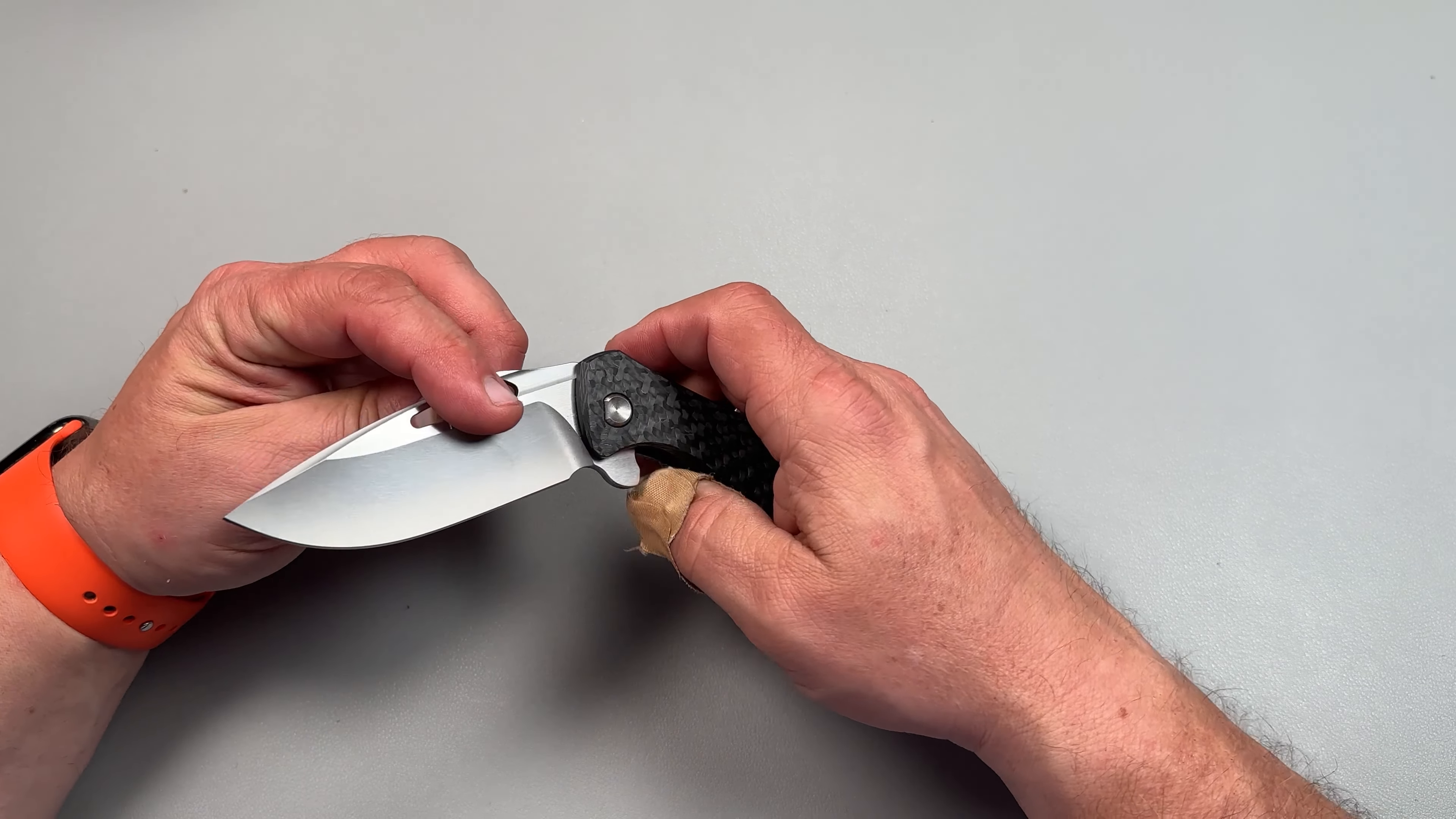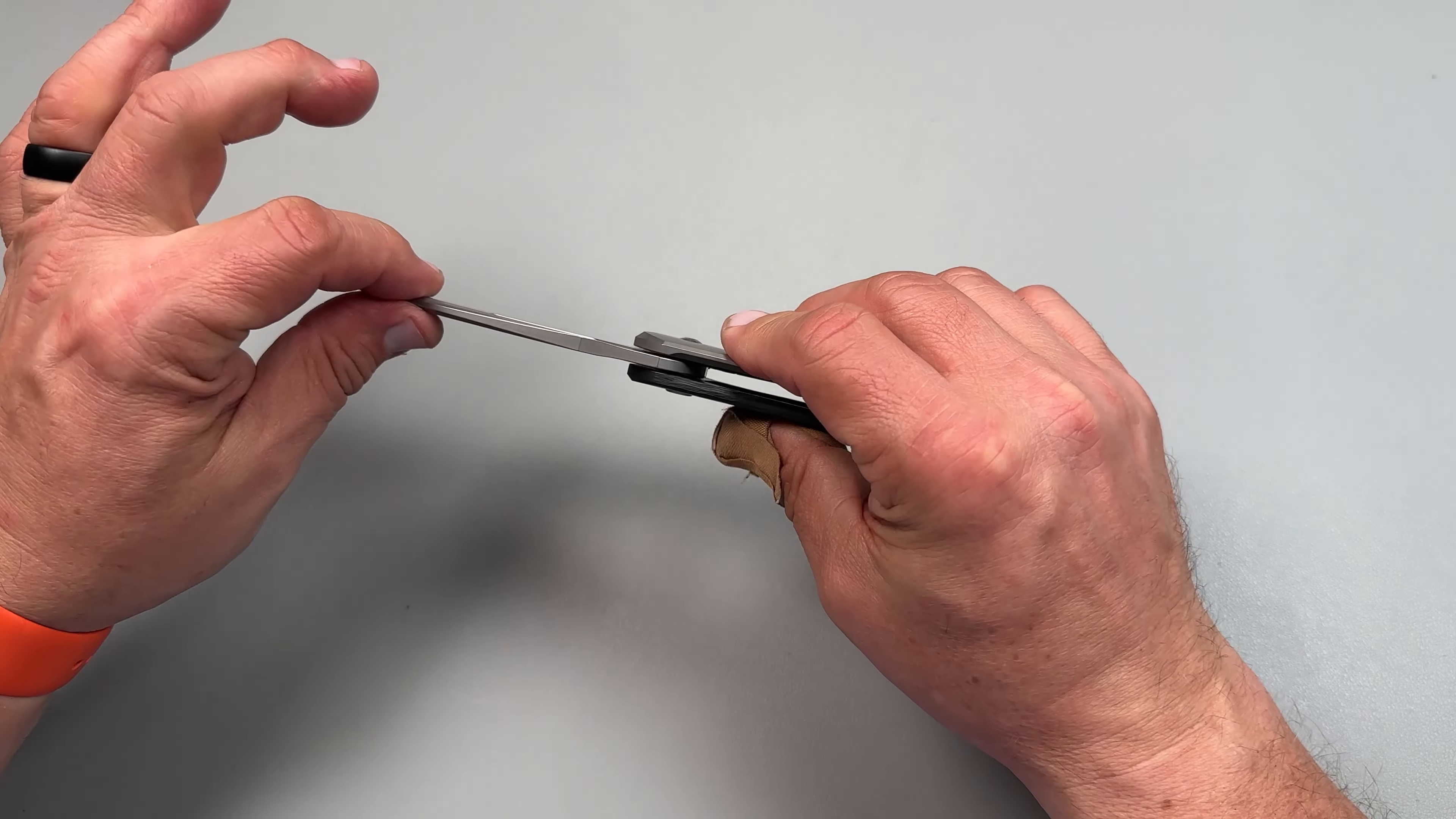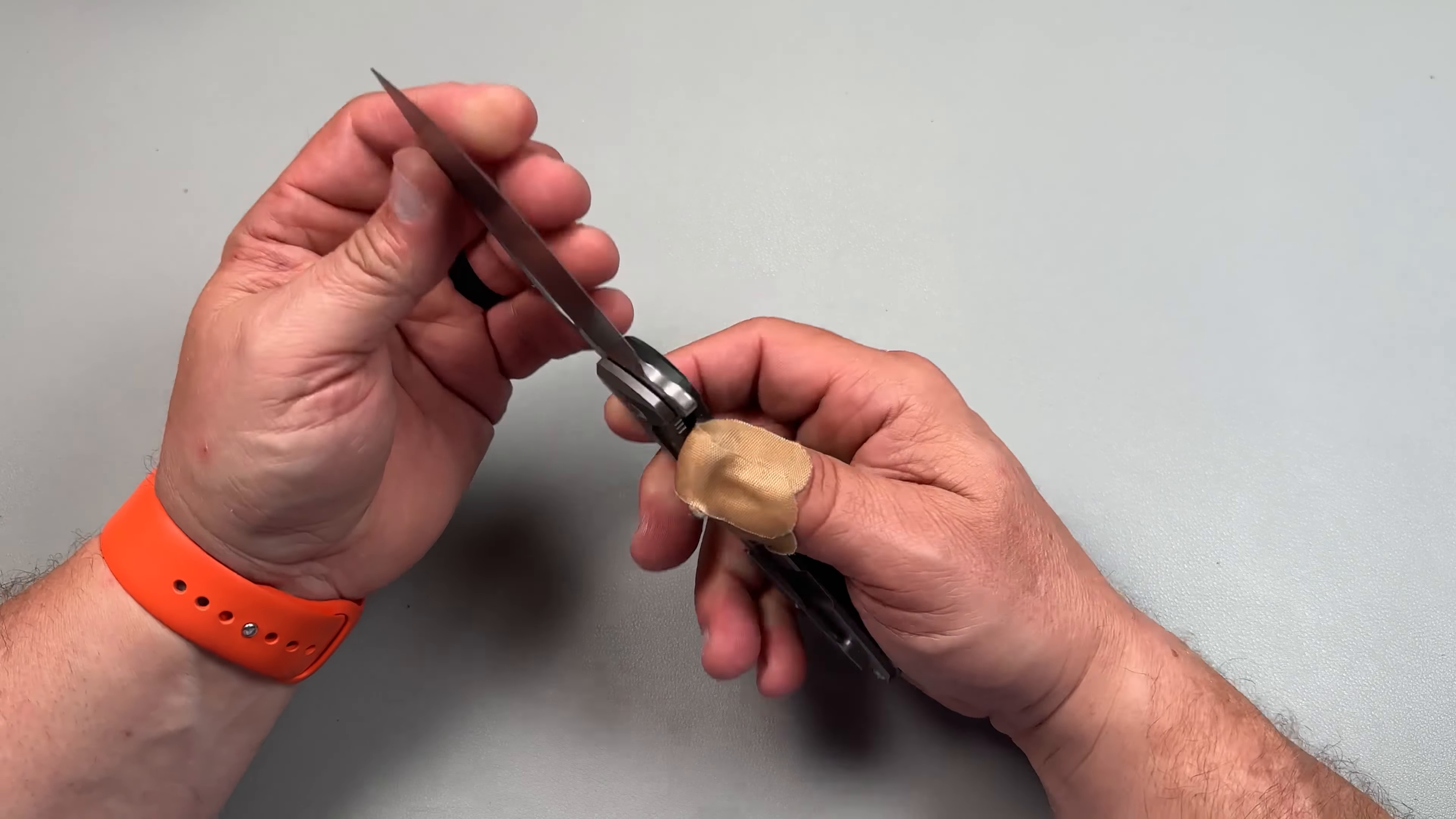This particular one is M390 blade steel. You can see that right there. Hollow grind, nice big thick knife goes out to a nice strong tip, beautiful belly there. This comes down to a very thin edge. It's pretty sharp.